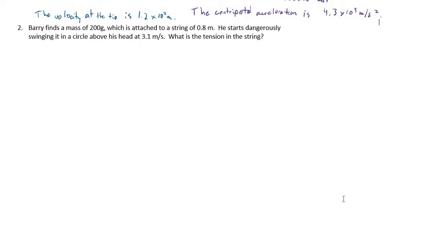So let's draw a quick little diagram of this Barry guy here. Here's Barry. Barry, he's holding this string of 0.8 meters here. It's going to be the radius of our circle. And he's ridiculously swinging this thing around in his head. He's got this mass here of 200 grams sitting at the end of it.